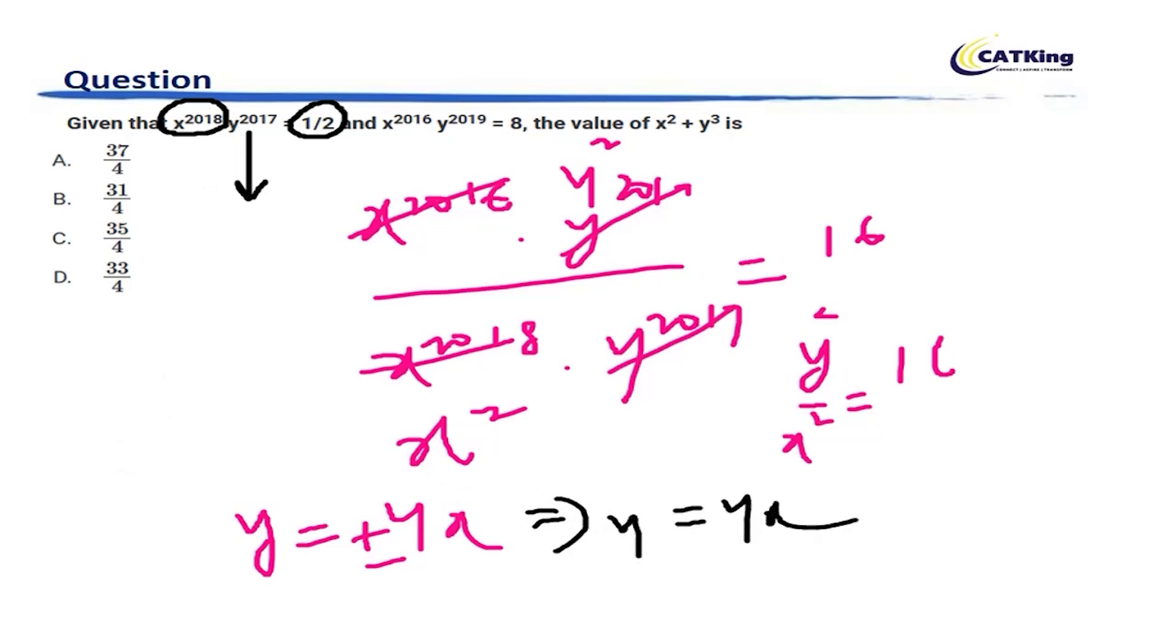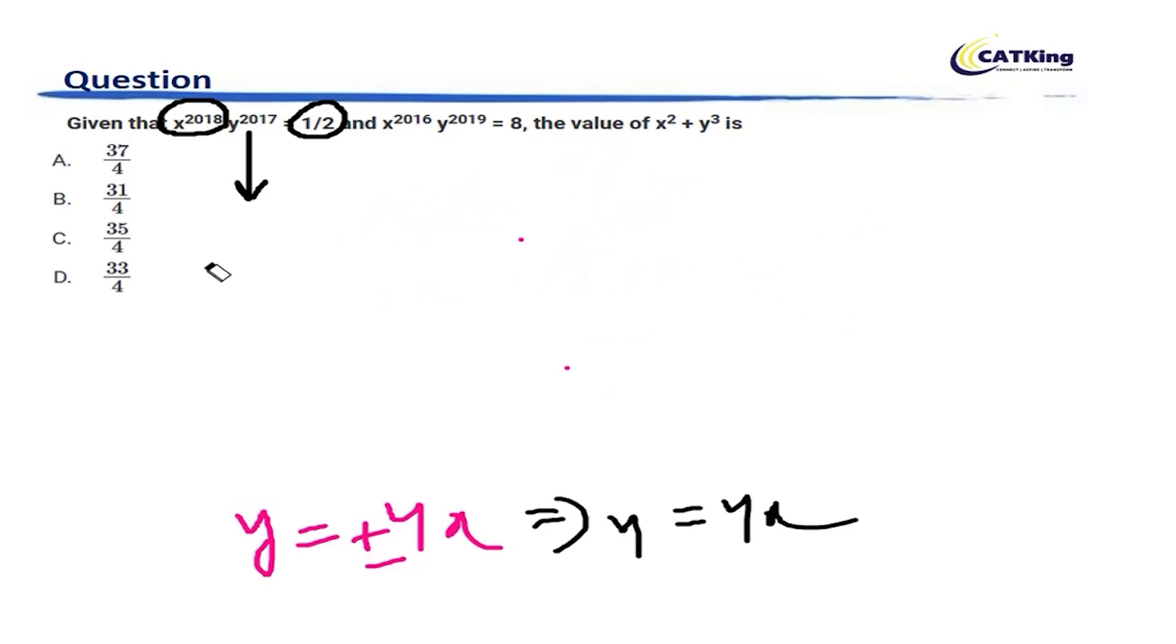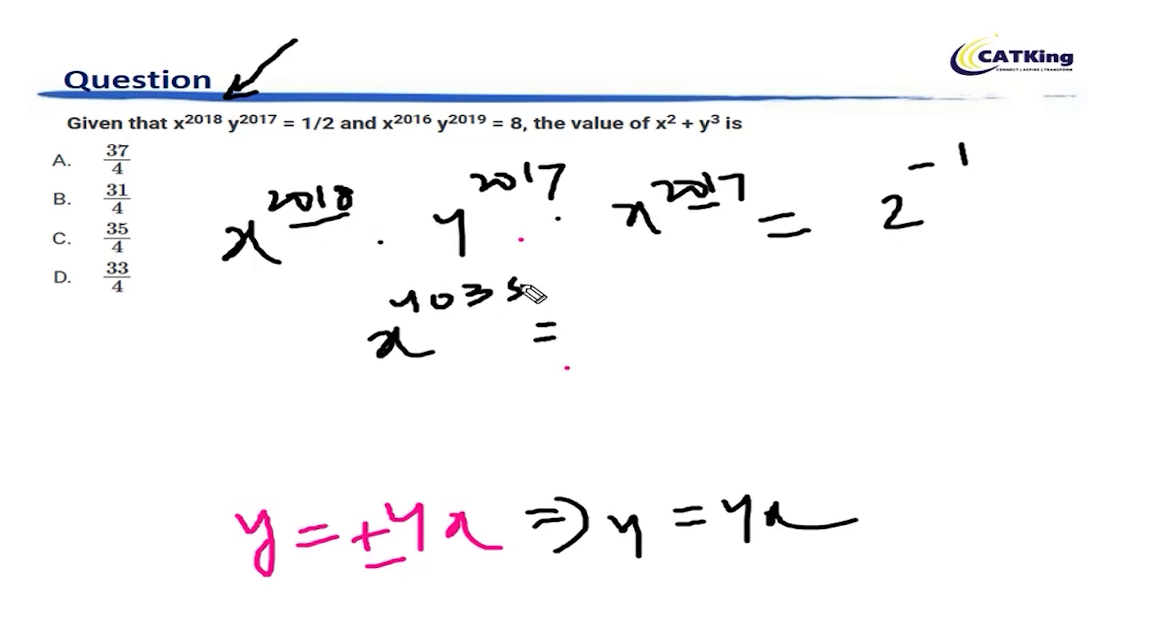Now, y is equal to 4x is something that is known to us. Now, that y is equal to 4x is known to us. How will we solve the remaining part is an important exercise. Now, let's pick one of this. Let's pick this and substitute. So, x to the power 2018 into y, y is equal to 4x. So, 4 to the power 2017 into x to the power 2017 is equal to 1 by 2 is 2 to the power minus 1.